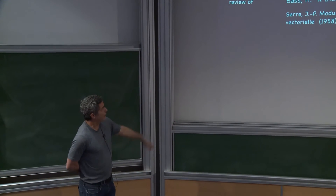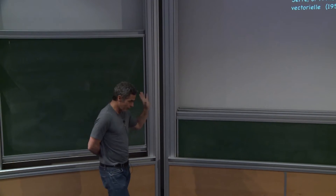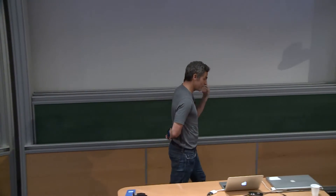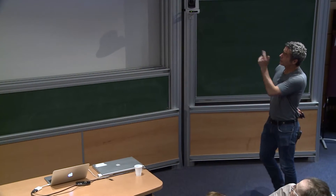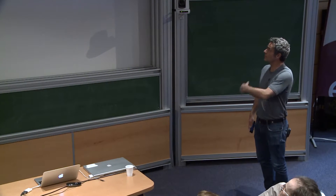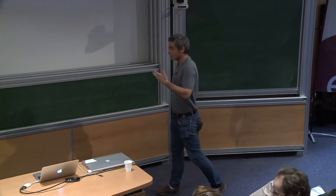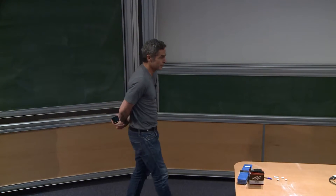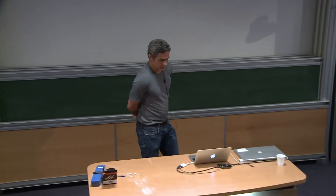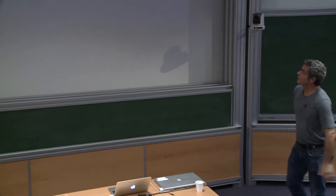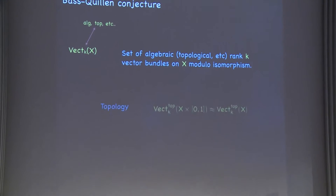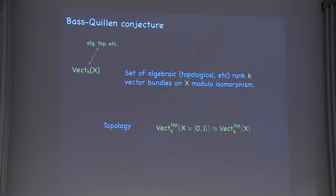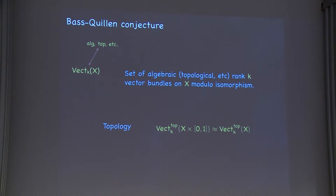Adams said to use bundle theory as a conjecture-generating device and try to prove these things about rings. One of the most definitive conjectures along these lines is what's known as the Bass-Quillen conjecture. That concerns — I'll write Vect K for the set of isomorphism classes of rank K vector bundles, decorated with algebraic, topological, or whatever. The basic thing about topological vector bundles is they're homotopy invariant: isomorphism classes of a vector bundle over X cross an interval is the same as over X.